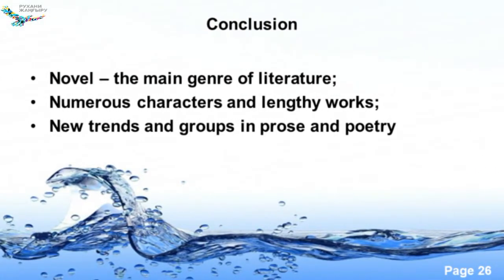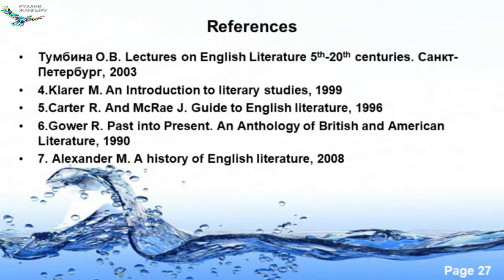So generally we can have some conclusion to this lecture: the novel was the main genre of literature, distinguished by numerous characters and lengthy works, with the appearance of new trends and genres in the beginning of the 20th century due to social and economic reforms, together in prose and poetry. As for some additional information, you can have a look at some works written by the following writers to get a more detailed and more realistic picture.